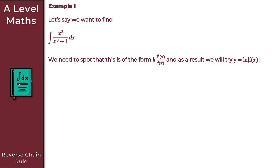The first thing we need to do is spot the form that our integrand takes. In this case our integrand is of the form k times f prime of x all over f of x. As a result, we're going to try y equals ln of our denominator f of x, so y equals ln of x cubed plus 1. Differentiating y with respect to x gives dy/dx equals 3x squared all over x cubed plus 1.